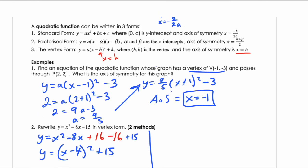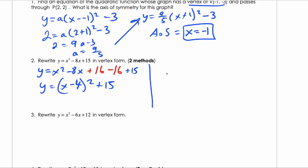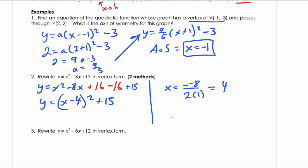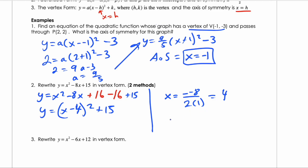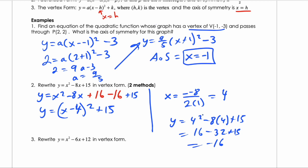Another way to get the vertex is to use x equals negative b over 2a. So x equals negative negative 8 over 2, which equals 4 — matching what we had before. To get the y-value at the vertex, substitute x equals 4: y equals 4 squared minus 8 times 4 plus 15, which is 16 minus 32 plus 15. That gives negative 16 plus 15 — wait, negative 16 plus 15 is negative 1. So the vertex is indeed (4, negative 1).